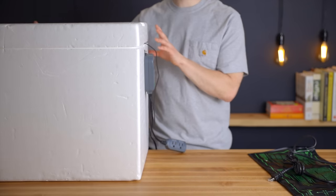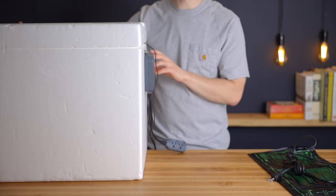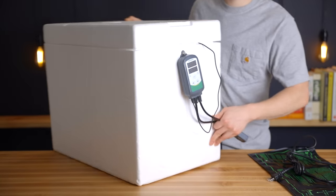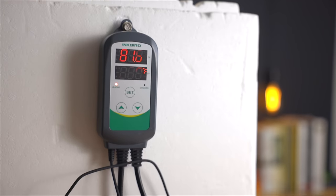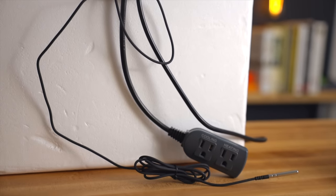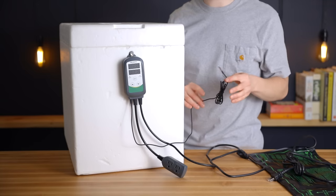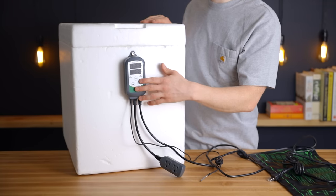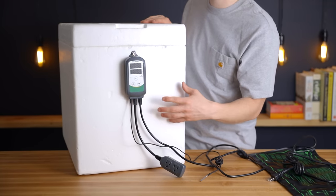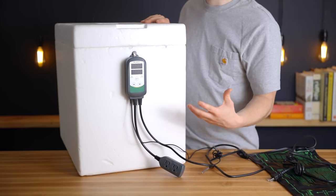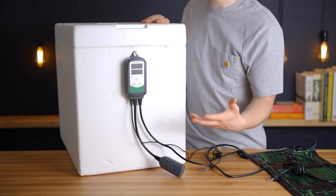Now the third item is one that will help us dial in the exact temperatures that we need and that is a temperature controller. Essentially it just has a temperature probe on one end that monitors the current temperature inside the box and then you can use this controller here to set the desired temperature. And as you can see I just screwed mine into the side of the cooler for organization purposes.